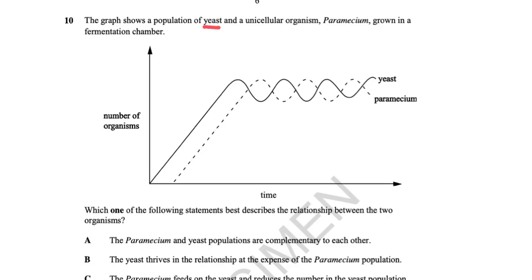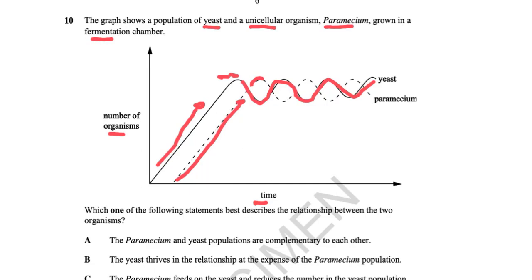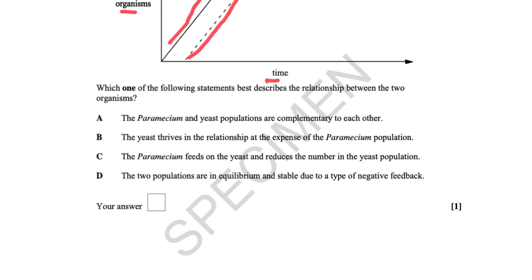A graph shows a population of yeast (a unicellular fungus) and paramecium (a protist) grown in a fermentation chamber. The yeast population increases until it reaches a level and then fluctuates. The paramecium population starts later, increases, and then fluctuates as the yeast population fluctuates. The question asks which statement best describes the relationship between the two organisms. The answer is D: the two populations are in equilibrium and stable due to a type of negative feedback.